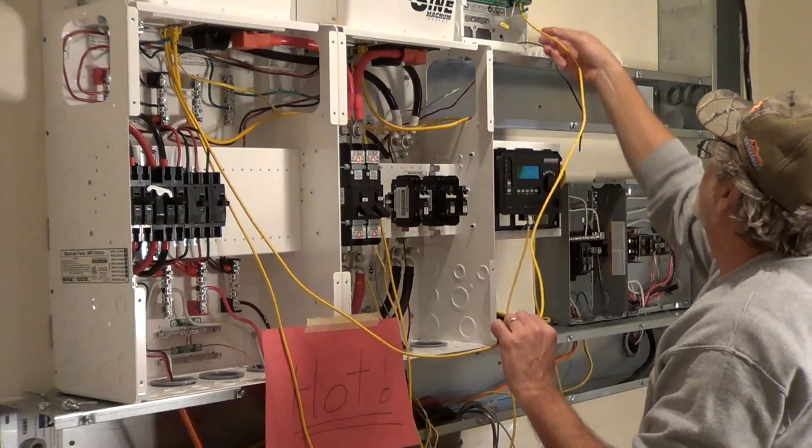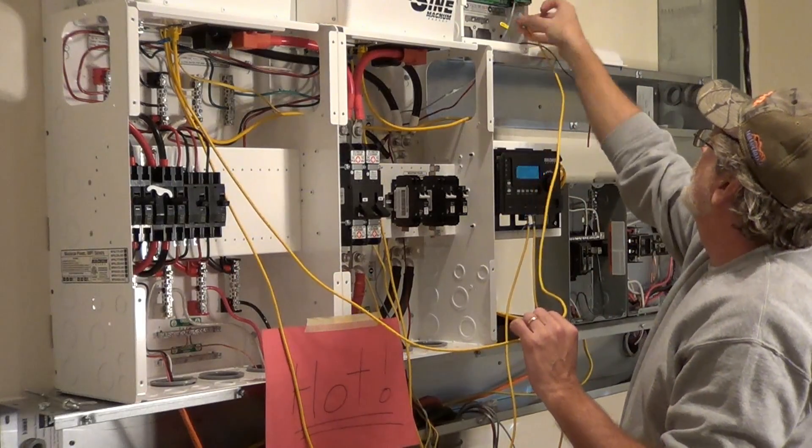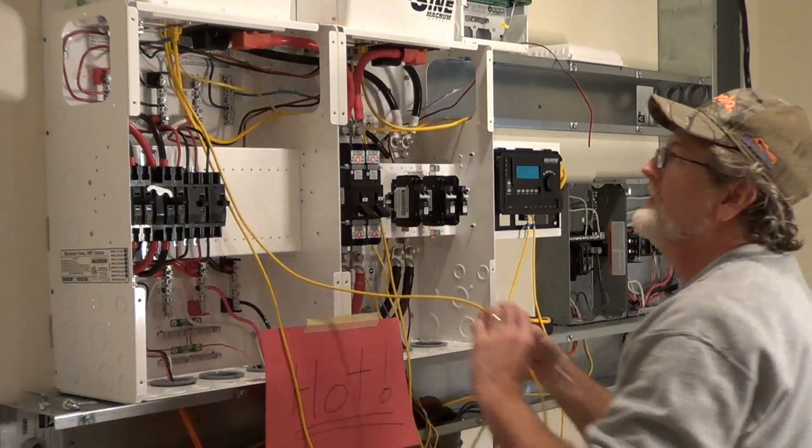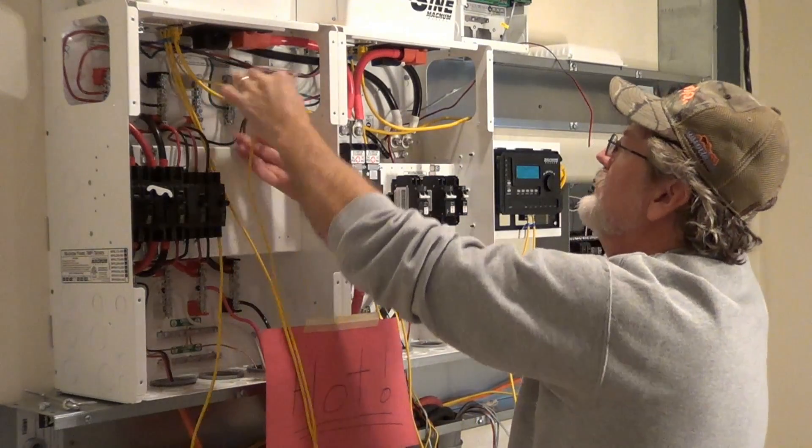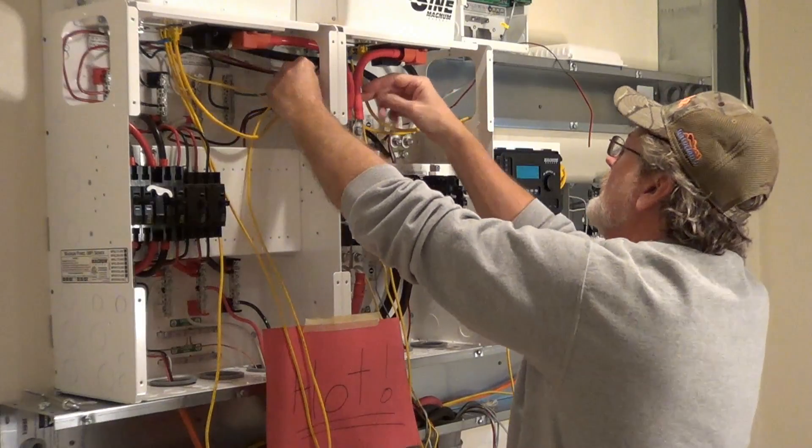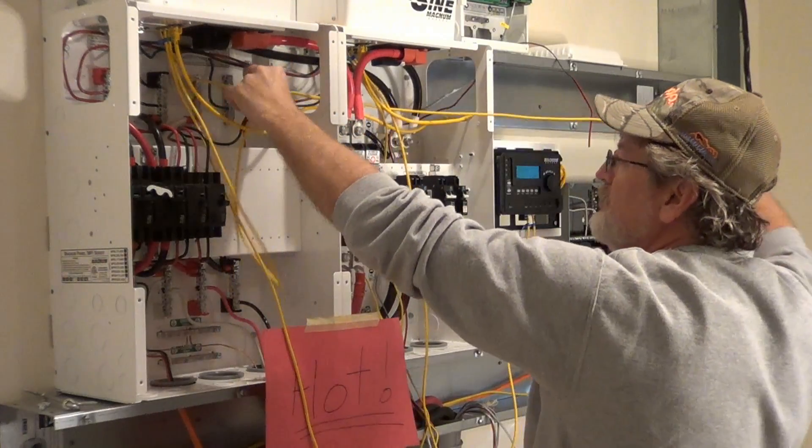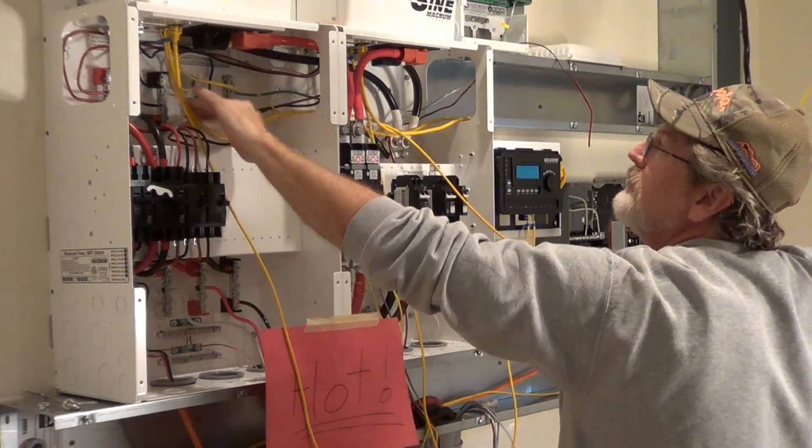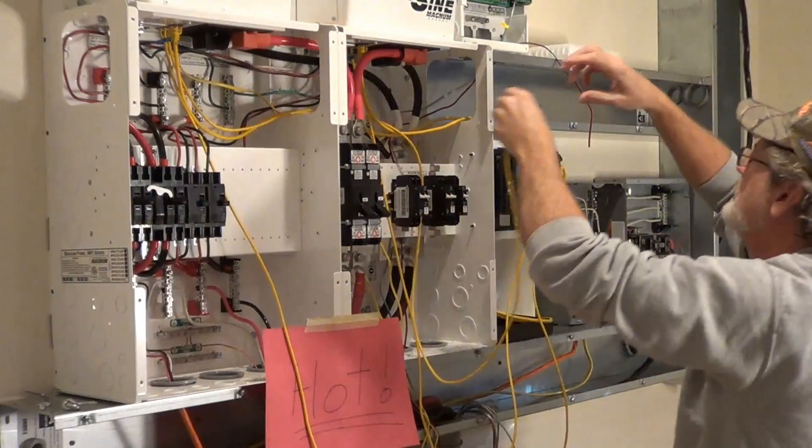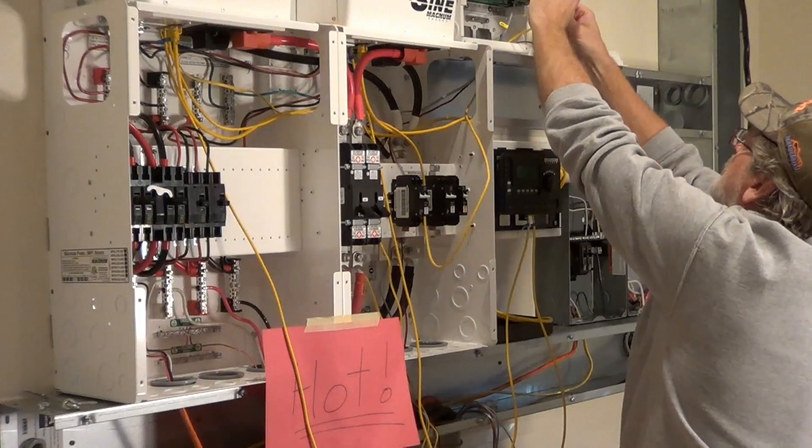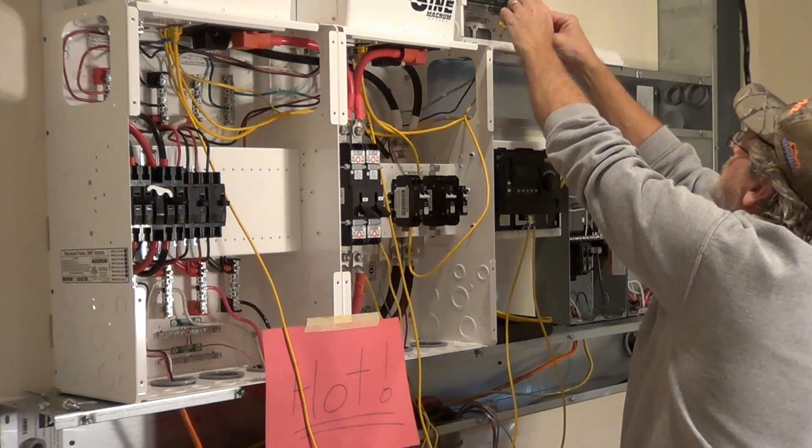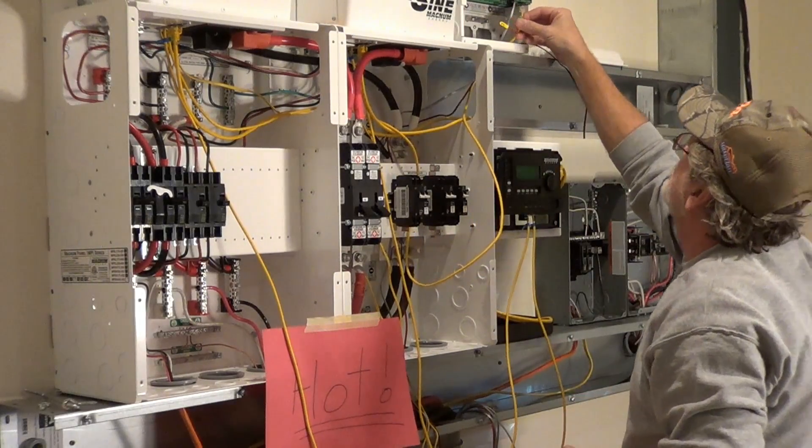All right, I'm jumping around a little bit. This is the network cable from the master inverter. It'll run up to the network port on the PT100, on the first one. I'm going to have two of these.